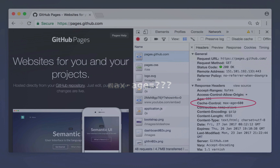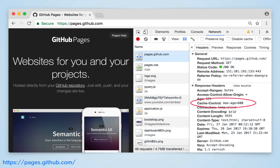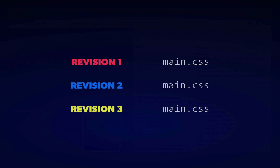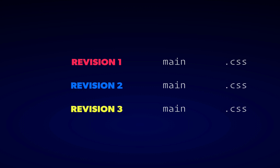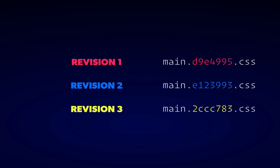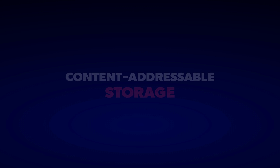GitHub Pages takes the short max-age approach, setting it to 10 minutes. Similar to Surge, this is a reasonable strategy when you don't know anything about the files themselves, but it's a long way from the best-case scenario. The root cause of these problems is because we're expecting that the content of a file can change independently of its URL. If we knew that a given file would never change, we could set the max-age to a huge number and breathe easy. Then, when we need to update it, we could just point everything at a new URL.